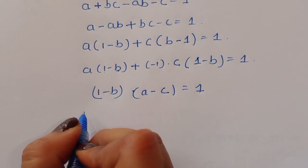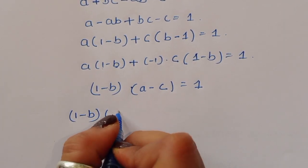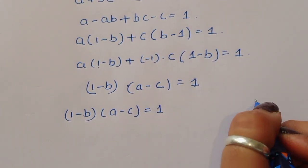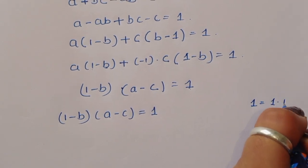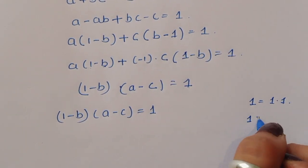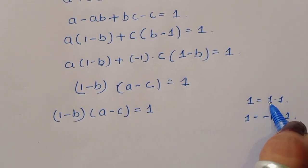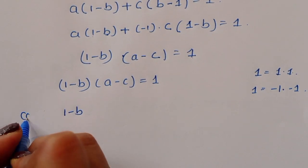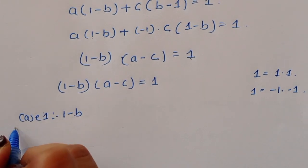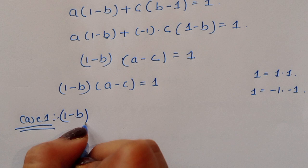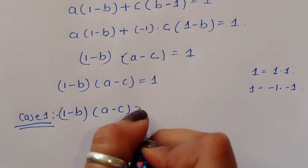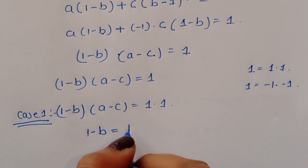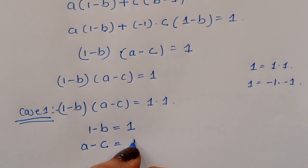We now have (1 − b)(a − c) = 1. The factors of 1 are: Case 1: 1 × 1, and Case 2: (−1) × (−1). In Case 1, we set 1 − b = 1 and a − c = 1.